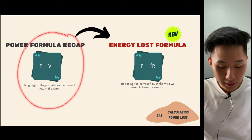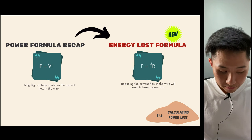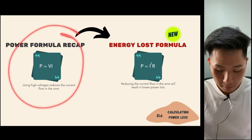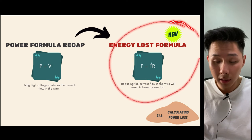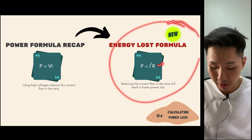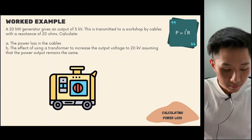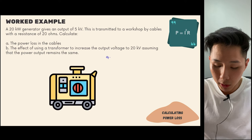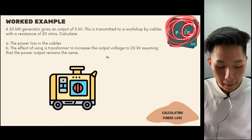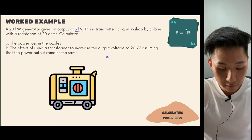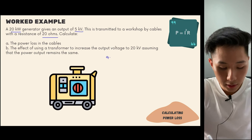Let's look at some new formulas for this chapter. In addition to P = VI from the previous chapter, we now have the energy loss formula P = I²R, where R stands for resistance. For the first question, we need to find the power loss. We are given: power = 20,000 W, voltage = 5,000 V, resistance = 20 ohms.